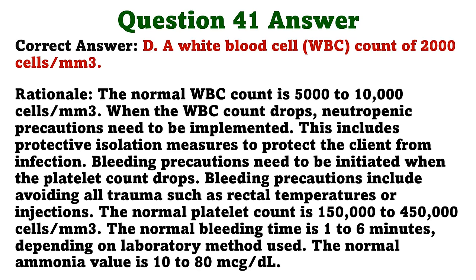The nurse is caring for a client with respiratory insufficiency. The arterial blood gas results indicate a pH of 7.50 and a pCO2 of 30 mmHg, and the nurse is told that the client is experiencing respiratory alkalosis. Which additional laboratory value should the nurse expect to note? The correct answer is B: a potassium level of 3.2 mEq/L. Signs and symptoms of respiratory alkalosis include tachypnea, mental status changes, dizziness, pallor around the mouth, spasms of the muscles of the hands, and hypokalemia. The remaining options identify normal laboratory results.